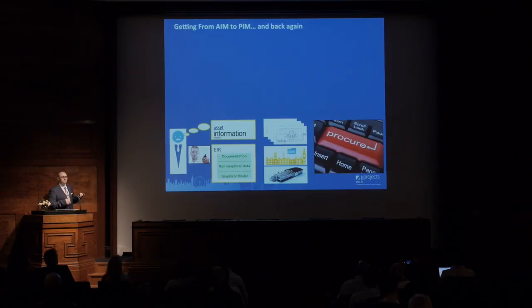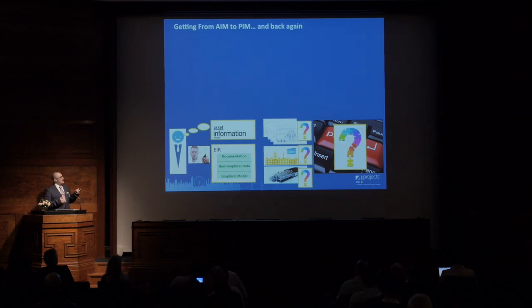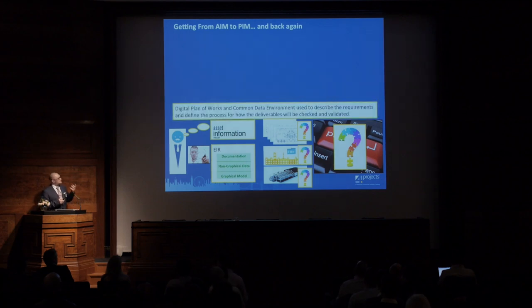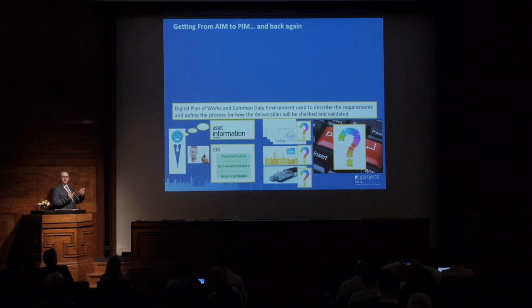So now we're ready — we've got our employer's information requirements. But have we actually built a repeatable, measurable process? If we've created an EIR, on our next project we're going to have to do it again. This is where the digital planner works comes in to help us plan in a consistent manner. The digital planner works in the common data environment — they're not competitors. A plan is put in place by the digital planner, but the CDE is there to help check that the information is arriving from the right people at the right time.